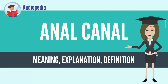The anal canal is divided into three parts. The zona columnaris is the upper half of the canal and is lined by simple columnar epithelium. The lower half of the anal canal, below the pectinate line, is divided into two zones separated by Hilton's white line. The two parts are the zona hemorrhagica and zona cutanea, lined by stratified squamous non-keratinized and stratified squamous keratinized epithelium, respectively.